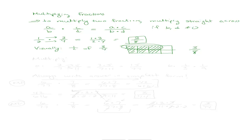Let's try a couple of other examples. Let's multiply three-sevenths times five-elevenths. When you multiply straight across, you end up with three times five over seven times eleven, which is fifteen over seventy-seven. And here's one for you to try: multiply one-third times one-ninth. Notice how this is very easy — there's nothing special you have to do.